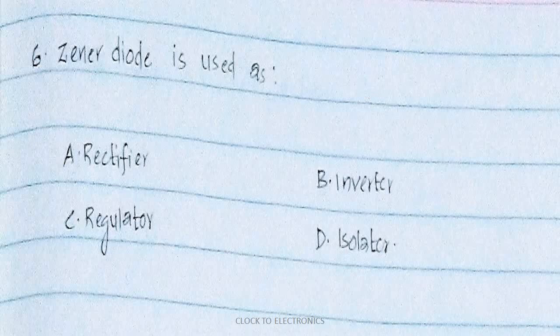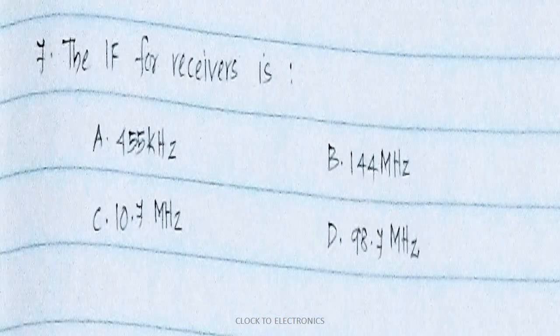Next, the Zener diode is used — what is the main application of a Zener diode? The options are rectifier, inverter, isolator, and regulator. The Zener diode is used as a voltage regulator. So option C — regulator — is the answer.